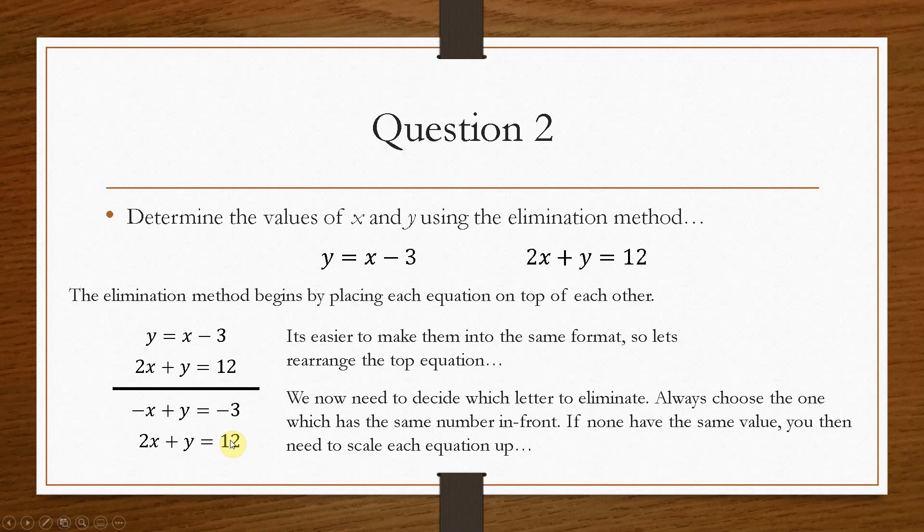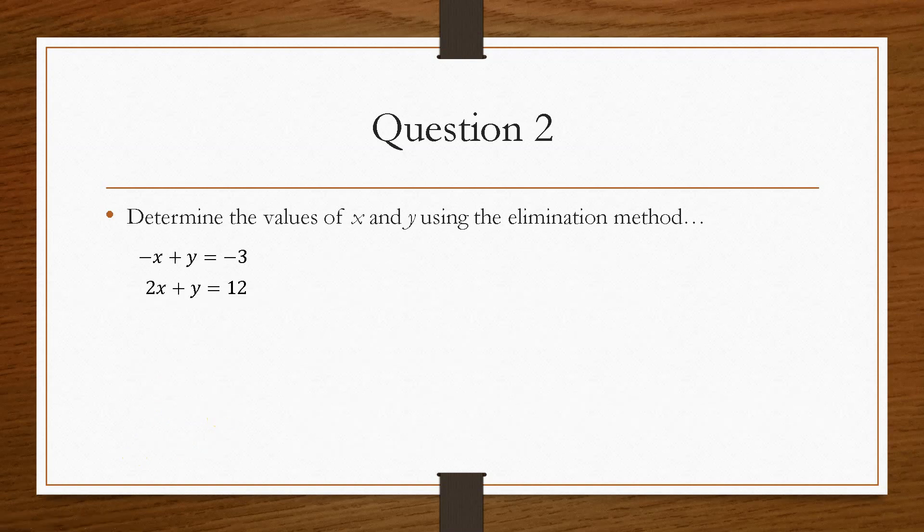So now we need to decide which letter we're going to eliminate. Now always make it easy for yourself, because we need to eliminate either the x or the y's, but in order to do that, they must be the same value. So the x's have different values. This is minus 1 and this is 2. So we would have to do some form of scale-up in order to get these the same value. However, the y's are exactly the same. So we wouldn't have to multiply any of these equations by anything. We can now cancel these out by subtraction.